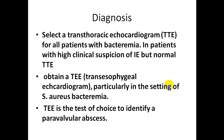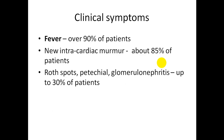For diagnosis, perform transthoracic echocardiography for all patients with bacteremia. In patients with high clinical suspicion but normal transthoracic echocardiography, obtain transesophageal echocardiography — particularly in the setting of Staphylococcus aureus bacteremia. Transesophageal echocardiography is the best choice to identify paravalvular abscess and vegetations.